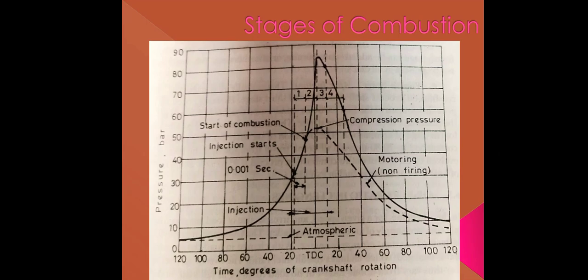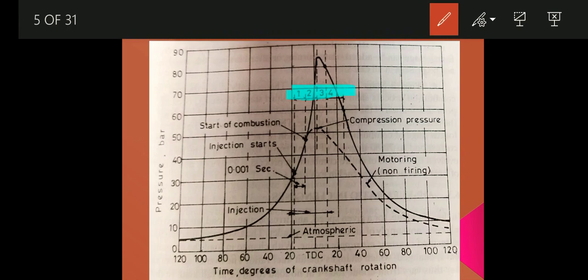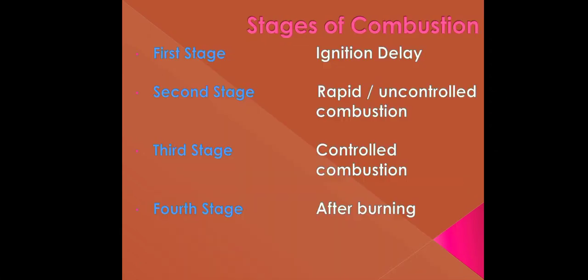In this figure, the four stages of combustion are shown, highlighted in blue as one, two, three, four. The total injection timing is also shown — injection starts at about 19 degrees before top dead center and ends at about 10 degrees after top dead center, giving a total injection timing of about 29 degrees. The four stages are: ignition delay, rapid or uncontrolled combustion, controlled combustion, and after burning.